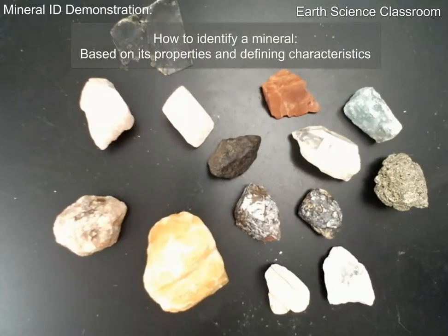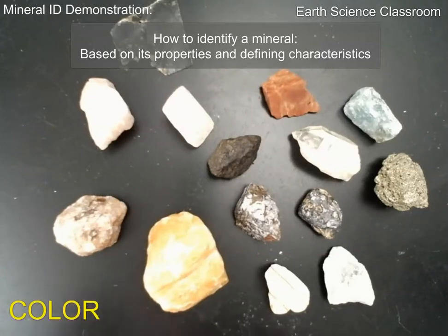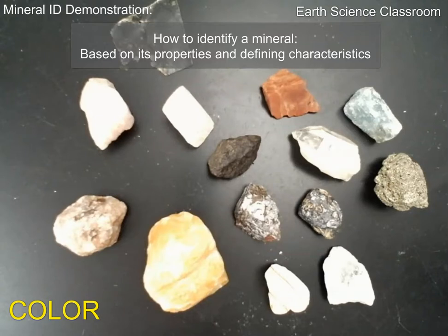What we're really looking at is how to ID a mineral. There are certain characteristics of minerals we can use to identify them — to figure out which mineral is which — because there are 5,000 and they all look pretty similar sometimes. One obvious observation is color. We have a variety of colors from yellows to reds to greens to clear whites and gold.